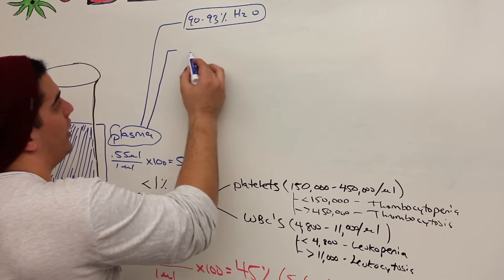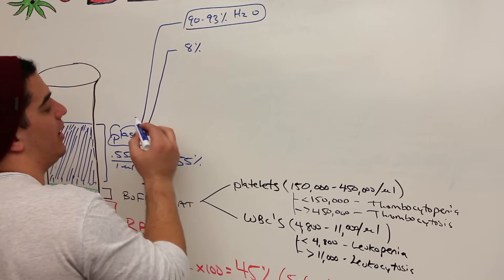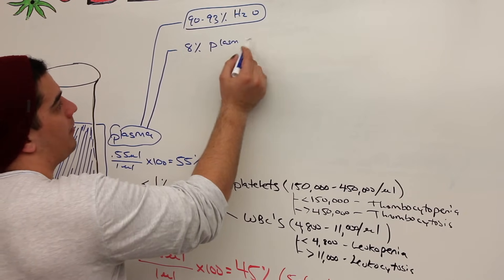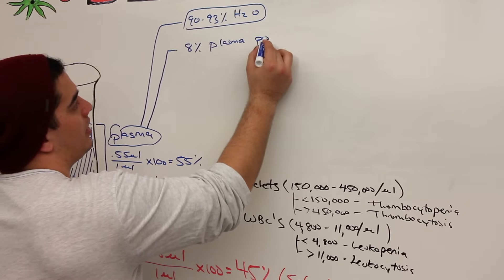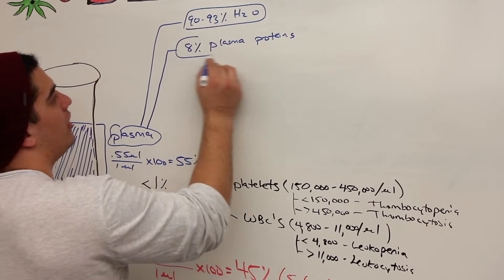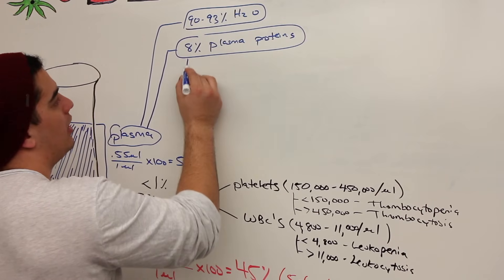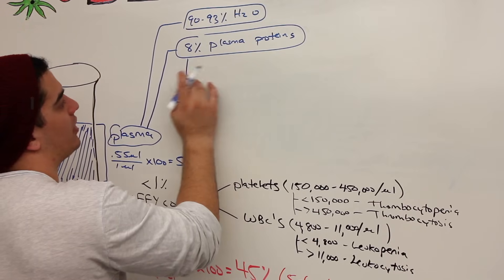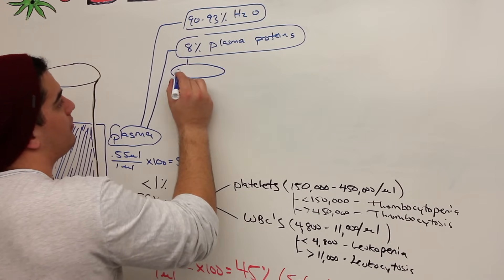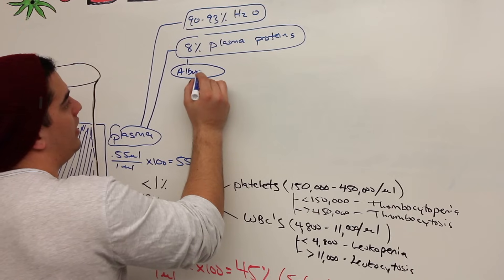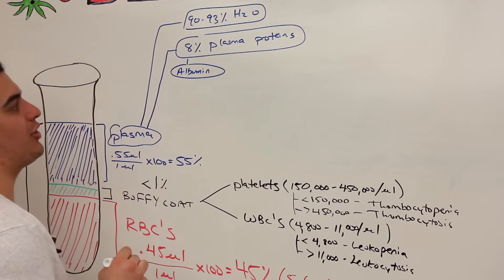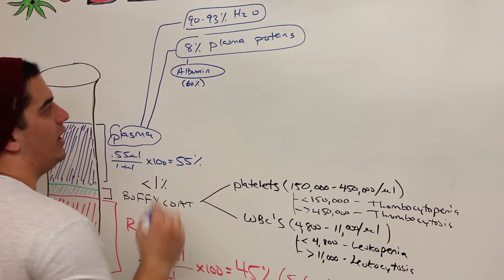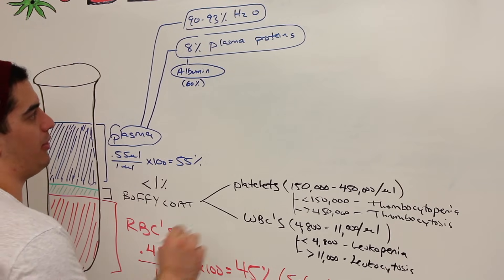Another thing that's really important is our plasma proteins, which account for about 8% of the plasma. So 8% of it is actually going to be plasma proteins. And what are these plasma proteins? The main ones, I'm going to mention each one. Let's say we talk about albumin. So the first one is actually albumin. And what does albumin do? Albumin actually regulates the water balance inside of our blood vessels. So he controls the osmotic pressure. He accounts for about 60% of these plasma proteins.